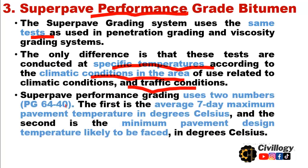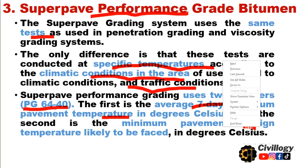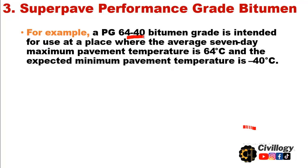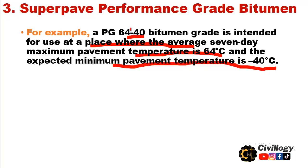Superpave performance grading uses two numbers — PG stands for performance grade. The first number is the average seven-day maximum pavement temperature in degrees Celsius, and the second is the minimum pavement design temperature likely to be experienced in degrees Celsius. For example, a PG-64-40 bitumen grade is intended for use where the average seven-day maximum pavement temperature is 64 degrees Celsius and the expected minimum pavement temperature is minus 40 degrees Celsius.